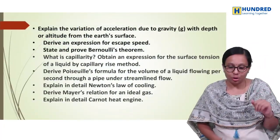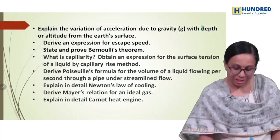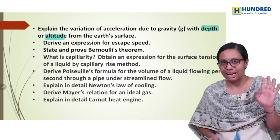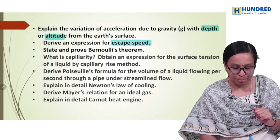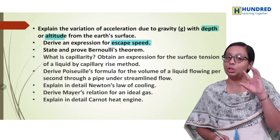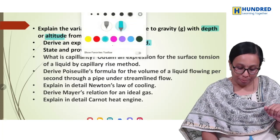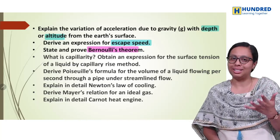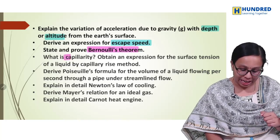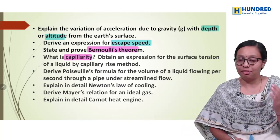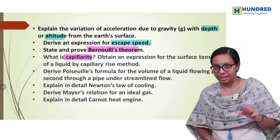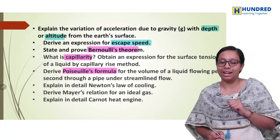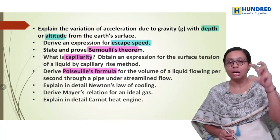Now the second volume. We have variation of G with depth and altitude — both have good chances. Then escape speed — very important. Properties of matter: we have to ask Bernoulli's theorem, capillarity, and surface tension — we have to prove the derivation. Then Stokes' formula using dimensional analysis — why do we derive Stokes' formula?